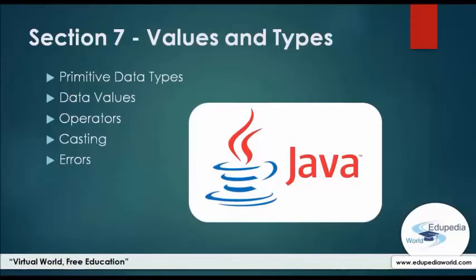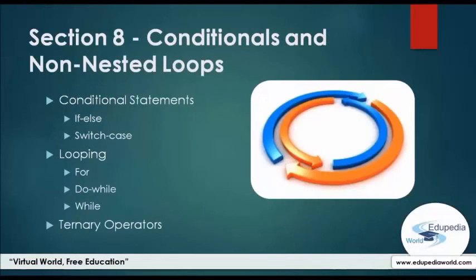The seventh section is a continuation of the sixth. Here we discuss data values and types — defining variables using data types, assigning data values, and writing expressions using operators. We will also show how data type casting works, and finally cover the common errors we will come across in our programs.